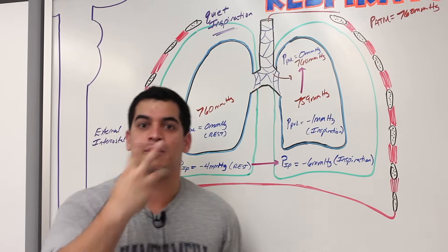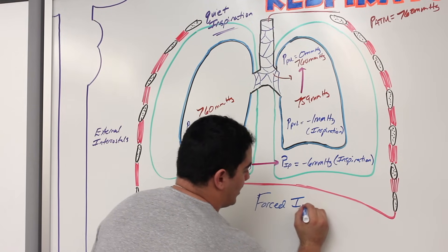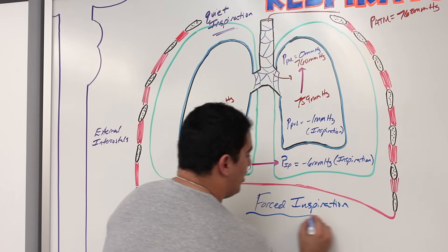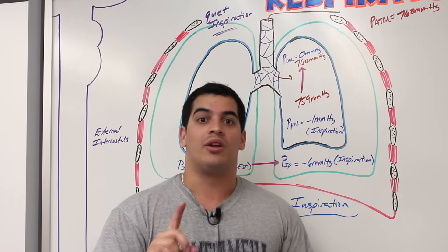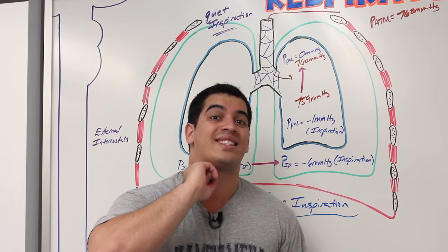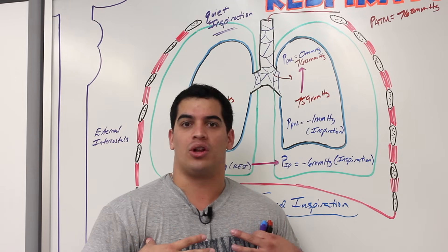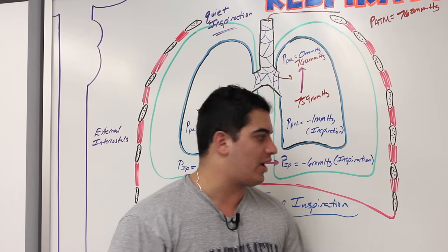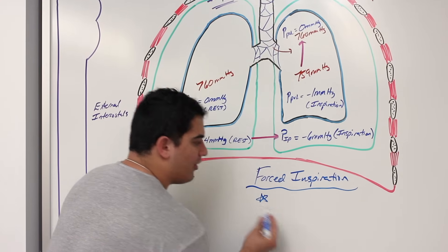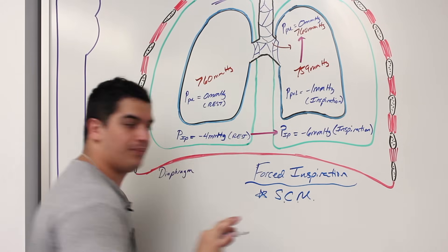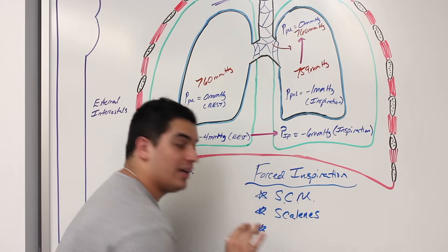Whenever we have to force inspire, we pull in accessory muscles. During forced inspiration, it requires the sternocleidomastoid, or SCM — it connects to the sternum and helps pull it out a little bit. There are also the scalenes on the lateral side of the neck — anterior, middle, and posterior — which connect to the ribs and help pull them up. And in well-developed individuals, the pectoralis minor connects to the third, fourth, and fifth ribs and helps pull them up.